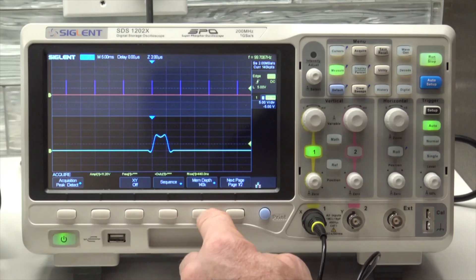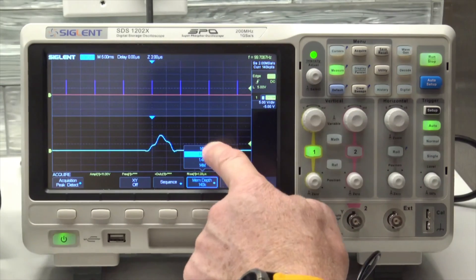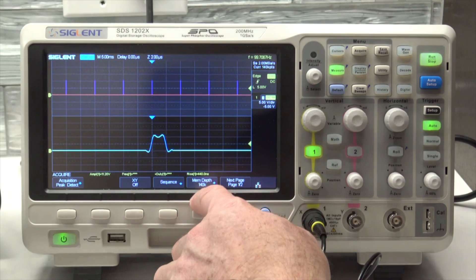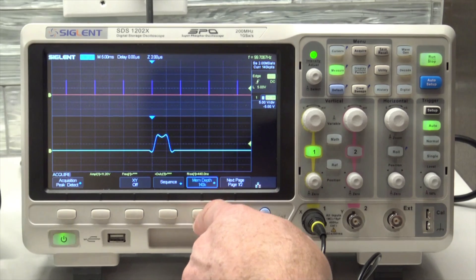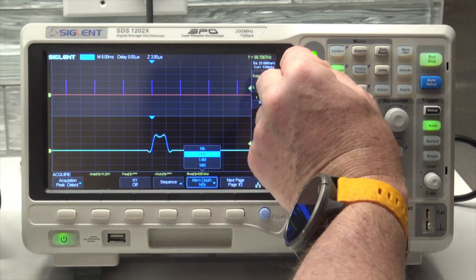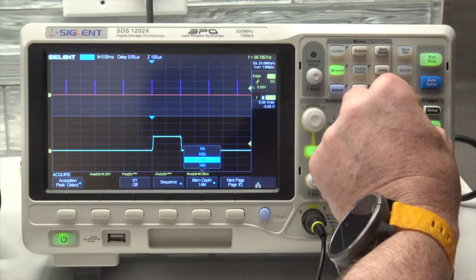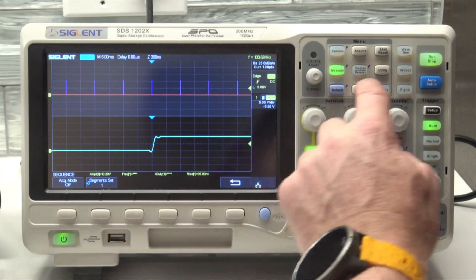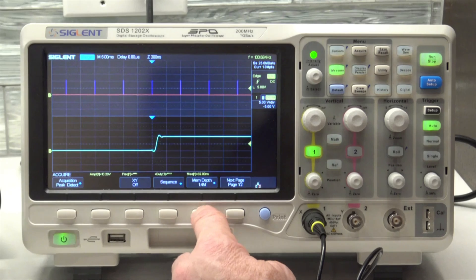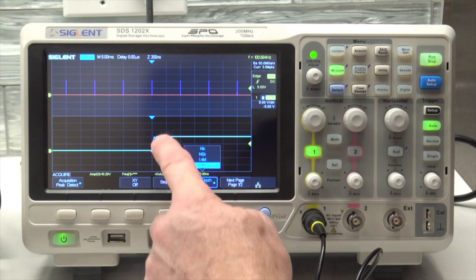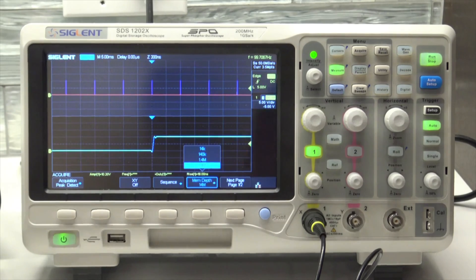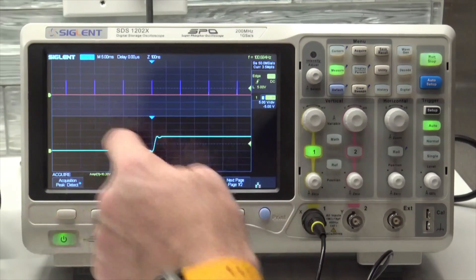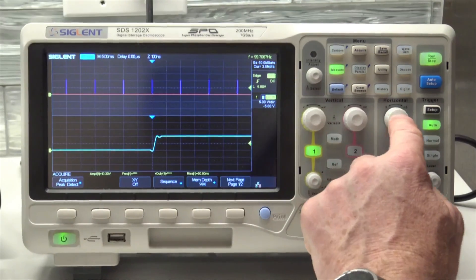It starts off with 14,000 points because the scope runs a lot quicker when you use less memory. More memory slows things down, but in this case we definitely want to get more points. Much more square. Let me go to memory depth and go to 14 million points. That's about as many points as I'm going to get, but the waveform still doesn't look that great. I got a lot of data points. Maybe I don't need that.